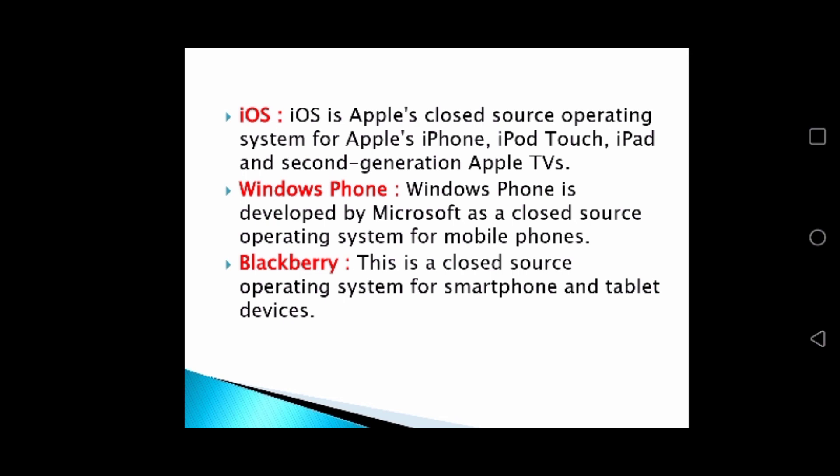Next is Windows Phone, developed by Microsoft as a closed source operating system for mobile phones. The last operating system is BlackBerry, a closed source operating system for smartphones and tablet devices. This was some basic information about IT. I hope you understand. Thanks for watching.